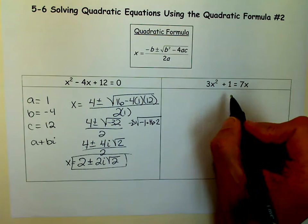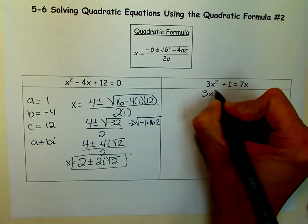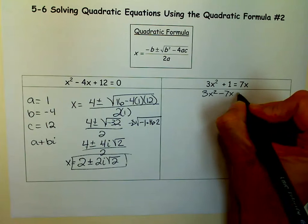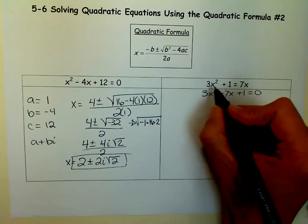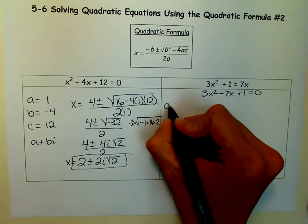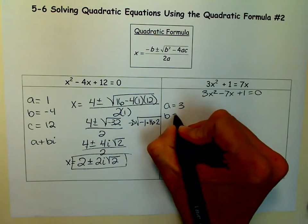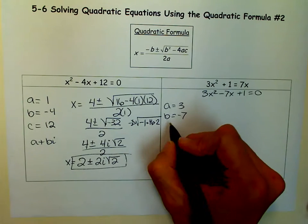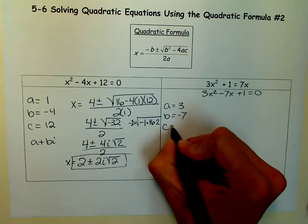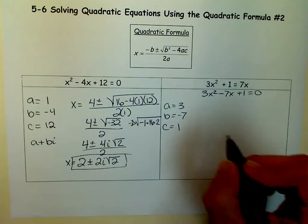Okay, so this one we need to move that 7x over before we're ready to use the quadratic formula. And notice I'm sandwiching it in between these two because I want it there so that I know that my a, b, and c are in order. Because sometimes if you leave it at the end, then you get the wrong b or c. So be careful with that. So now we're ready.